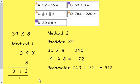We could have partitioned again. So if we partition 39, we're left with 30 and 9, and we have to multiply both bits by 8. So 30 times 8 would be 240. And then 9 times 8, of course, would be 72. We then would recombine the numbers, 240 and 72 would be 312.